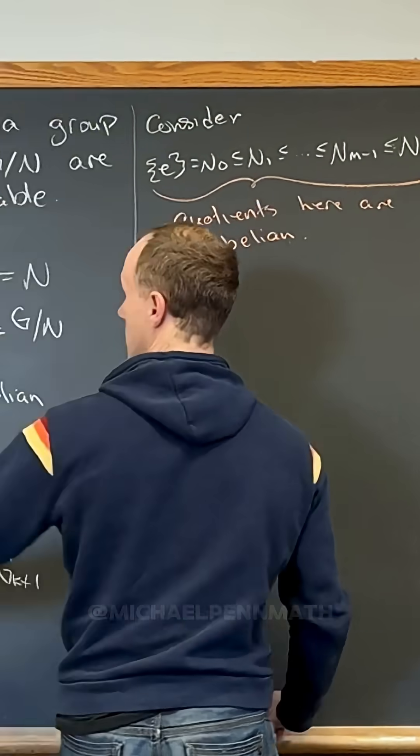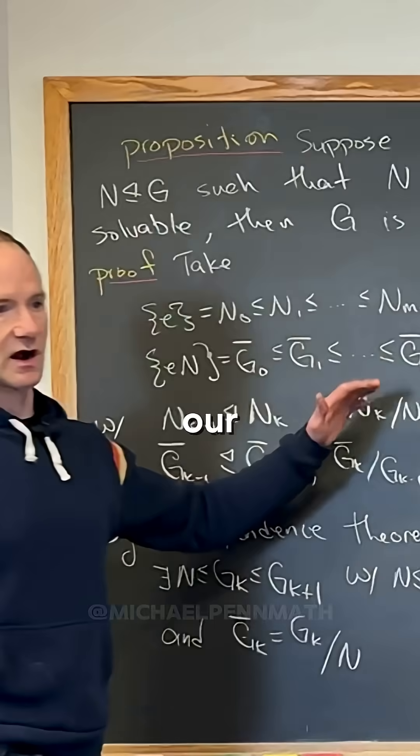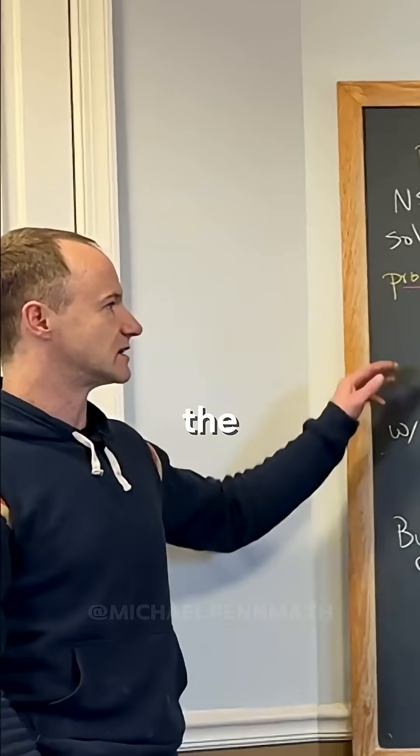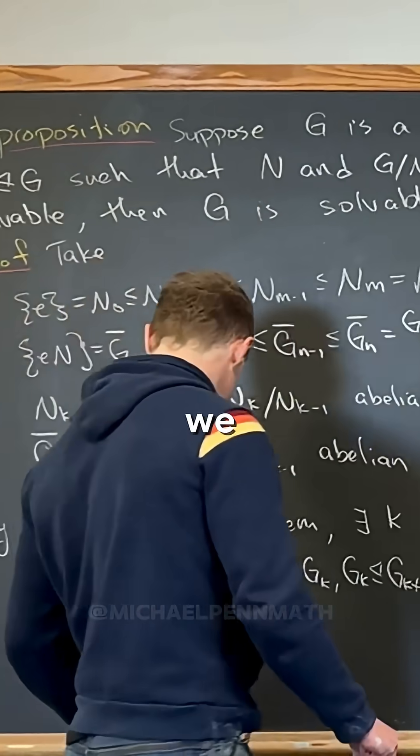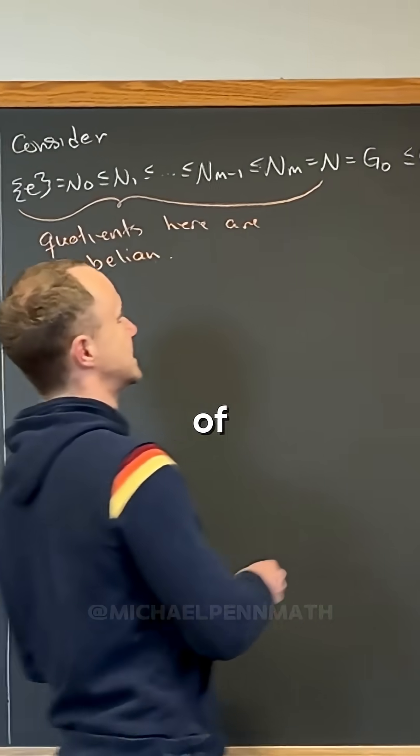Quotients here are abelian already, right? By our assumption, we're gluing something to the right of something that we know already. So that means we need to check the rest of these.